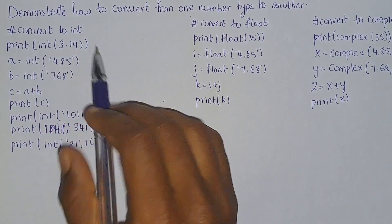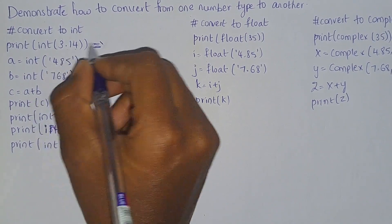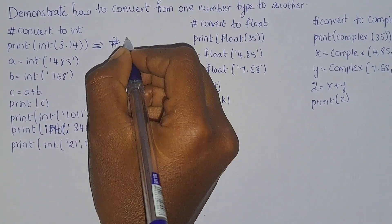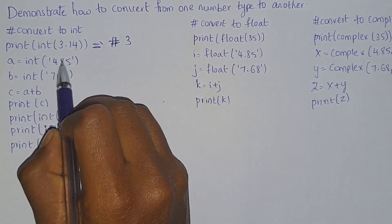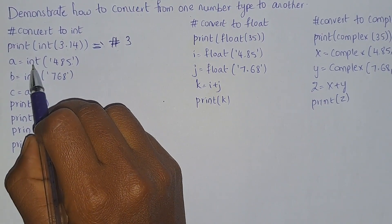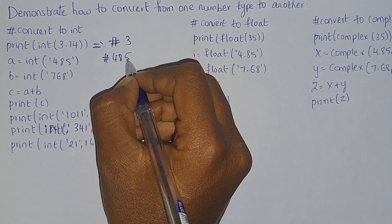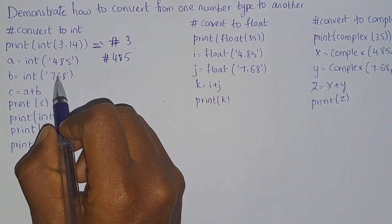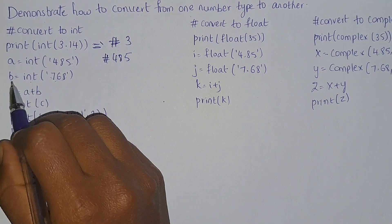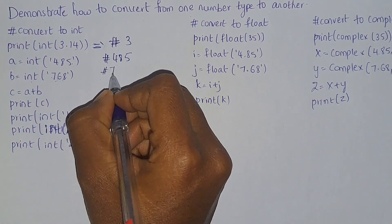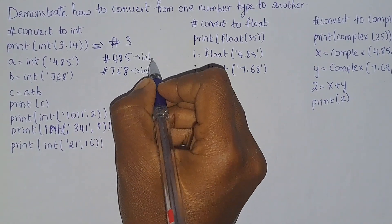If you print int(3.14), the int function will convert the given number into int, so your output will be 3. And if you take int of the string '485', we are converting this string into integer, so the variable a will contain 485 as integer type. Similarly, the string '768' is converted into integer using the int function, so b will contain 768 of integer data type.